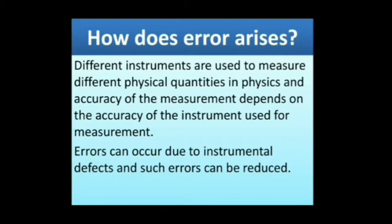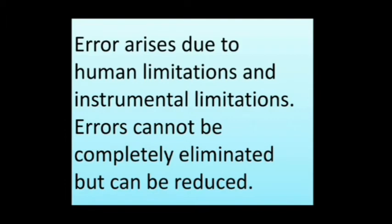We use different instruments to measure different physical quantities in physics, and the accuracy of the measurement depends on the accuracy of the instrument used. Errors can occur due to instrumental defects and such errors can be reduced. Error arises due to human limitations and instrumental limitations. Errors cannot be completely eliminated but they can be reduced.